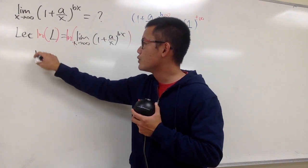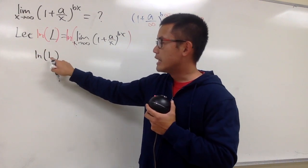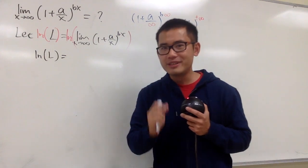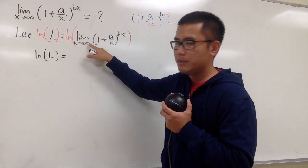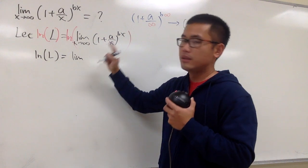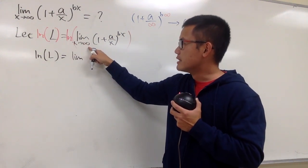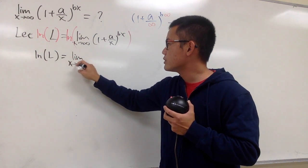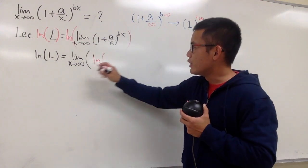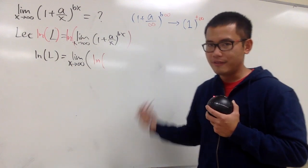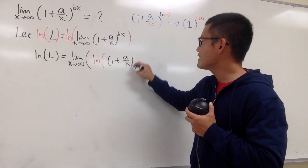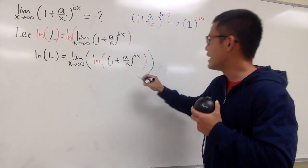On the left-hand side we have ln of L, which is our answer. On the right-hand side, ln of a limit is the same as the limit of the ln, because ln is a continuous function. So we get the limit as x goes to infinity of ln of (1 + a/x)^(bx).